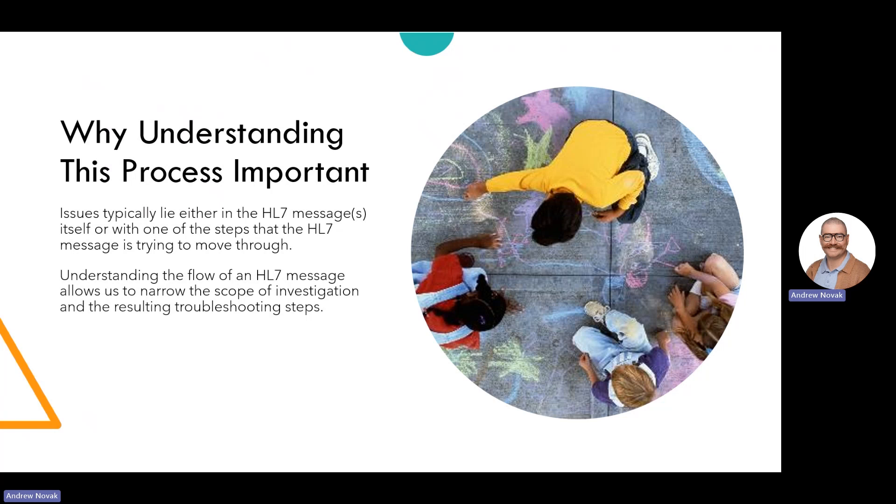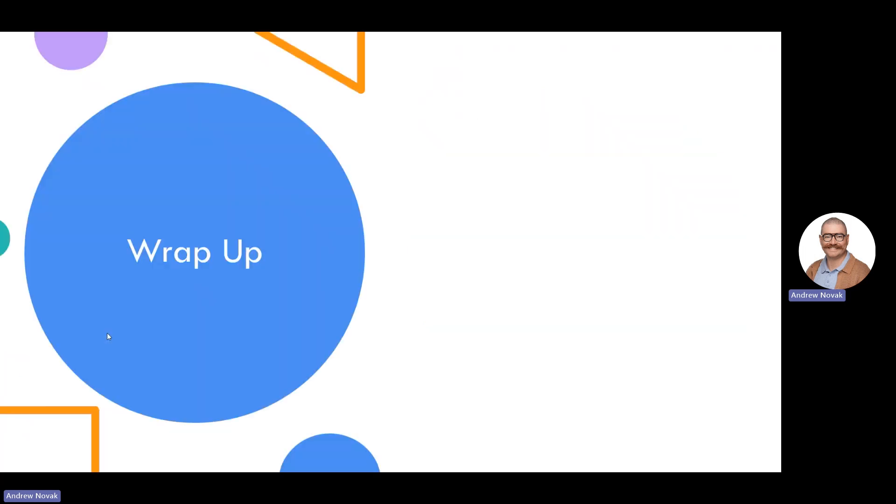We could talk for another three question corners about the specifics of HL7 messages, how they are processed by systems, the customization of specific messages for operational purposes, etc. But hopefully, this quick overview of the general life cycle of an HL7 message allows you to better understand how this system works and more easily isolate and troubleshoot an issue if it occurs. Thanks for watching.